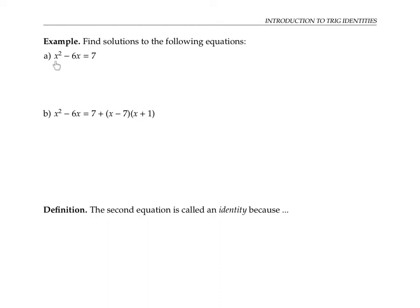If I want to find the solutions to this equation, I can rewrite it as x squared minus six x minus seven equals zero, factor it as x minus seven times x plus one equals zero, set the factors equal to zero — x minus seven equals zero, or x plus one equals zero — and that gives me the solutions x equals seven, or x equals negative one.